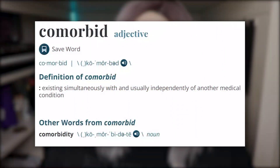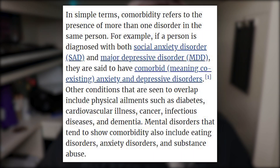So, what does comorbid mean? The Merriam-Webster dictionary defines comorbid as existing simultaneously with, and usually independently of, another medical condition. VeryWell goes a little bit further: in simple terms, comorbidity refers to the presence of more than one disorder in the same person. For example, if a person is diagnosed with both social anxiety disorder (SAD) and major depressive disorder (MDD), they are said to have comorbid — meaning coexisting — anxiety and depressive disorders. Other conditions that overlap include physical ailments such as diabetes, cardiovascular illness, cancer, infectious diseases, and dementia, as well as mental disorders like eating disorders, anxiety disorders, and substance abuse.